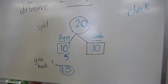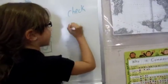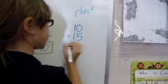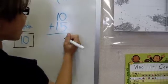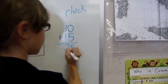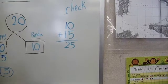But now let's check it. So, 10 plus 15. 0 plus 5 is 5, and 1 plus 1 is 2. So we got it right. It's 25.